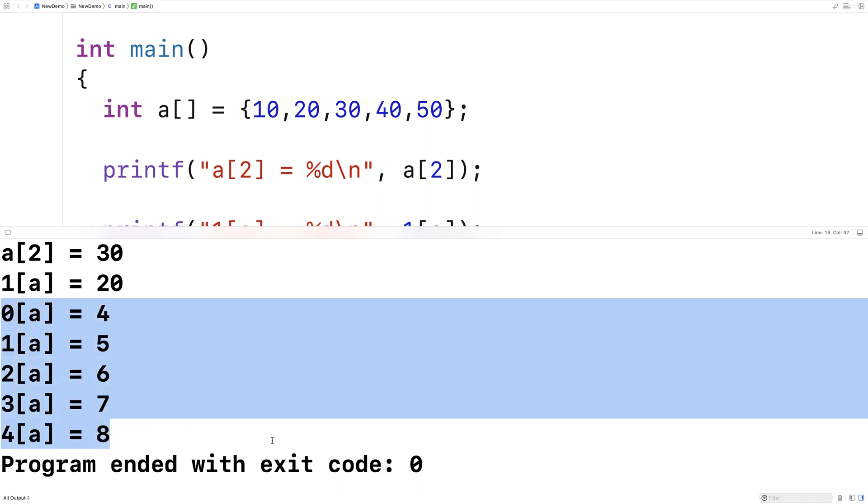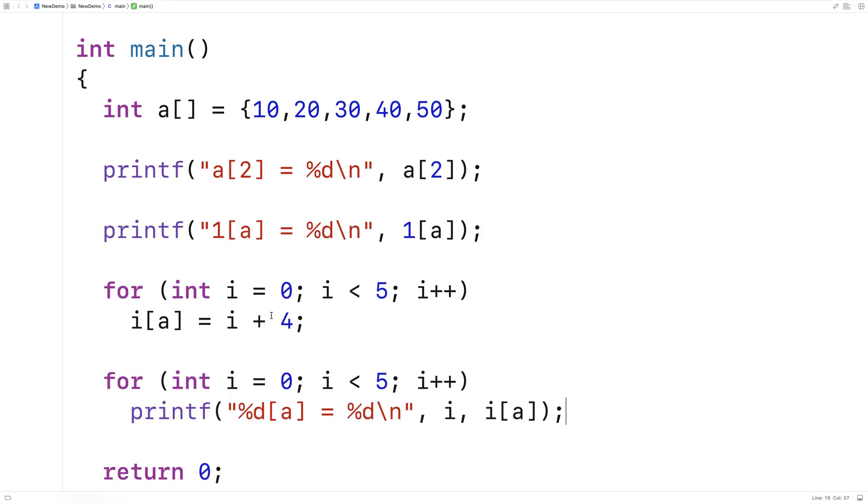So here we get 4, 5, 6, 7, 8 now in our array a because we added 4 to i when setting the elements at index i when i is going from 0 up until but not including 5, and then we print them out, we get 4, 5, 6, 7, 8.